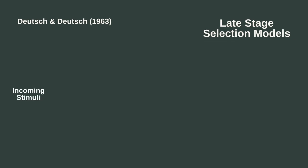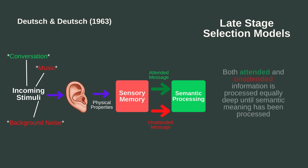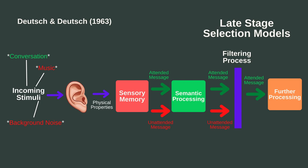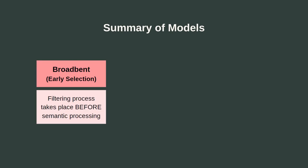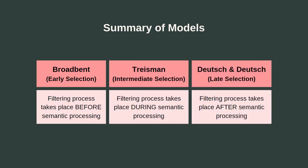Beyond the theories of Broadbent and Treisman, there are other theories — for instance the one proposed by Deutsch and Deutsch — that can be considered late stage selection models. According to this model, it is argued that within sensory limits, both attended and unattended stimuli are processed to the same depth, until both the attended and unattended messages are understood. Thus, within your attentional capacity, both the conversation we're having and all of the background noise are being processed equally deeply until the semantic meaning of the stimuli is understood. Only then are the most important stimuli — in this case, the conversation — selected for further processing. So while the filtering process takes place before meaning has been processed in Broadbent's model, and during the processing of meaning in Treisman's model, it takes place after meaning has been processed in the model by Deutsch and Deutsch.